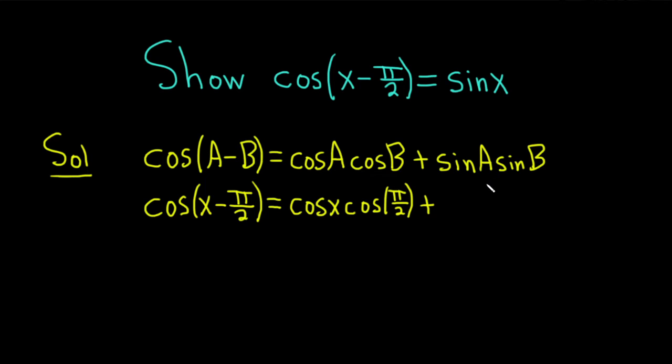plus the sine of a, but a is x, so this is the sine of x. And sine of b, but b is pi over 2, so we have the sine of pi over 2.